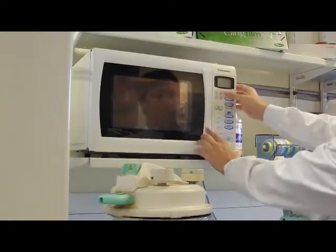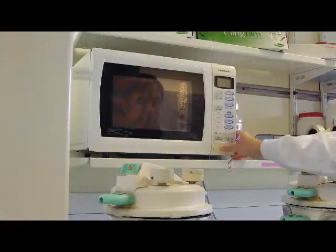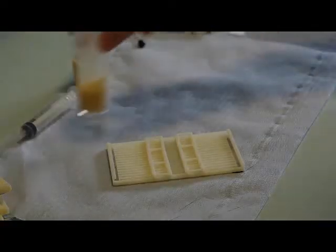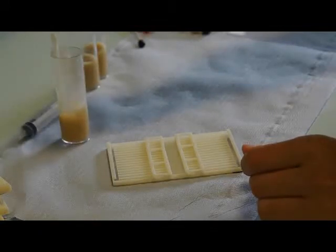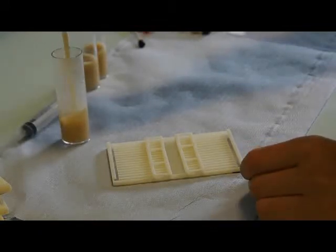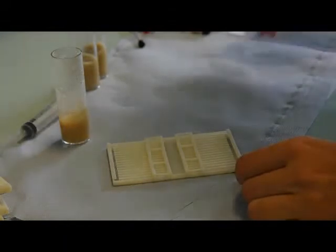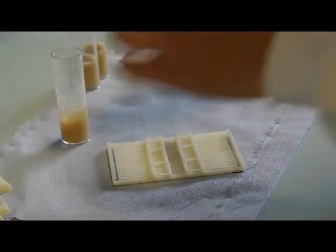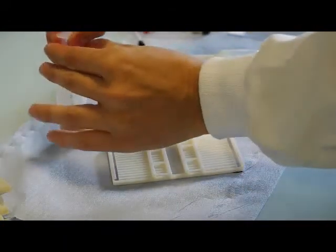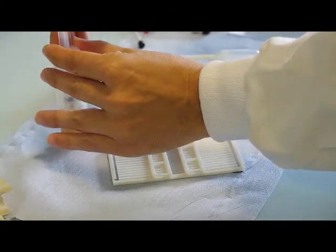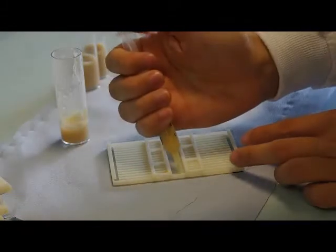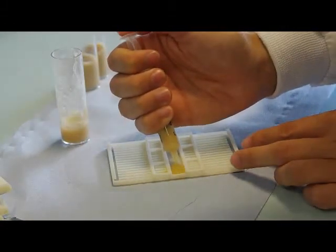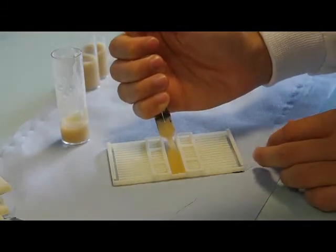Take a regular vial and microwave it for 5 to 10 seconds, or until the food melts. Gently stir the melted food to make sure it's homogeneous. Pour the food into the chamber using a 5ml syringe. Make sure you fill up to the right level, and try not to make too many air bubbles.